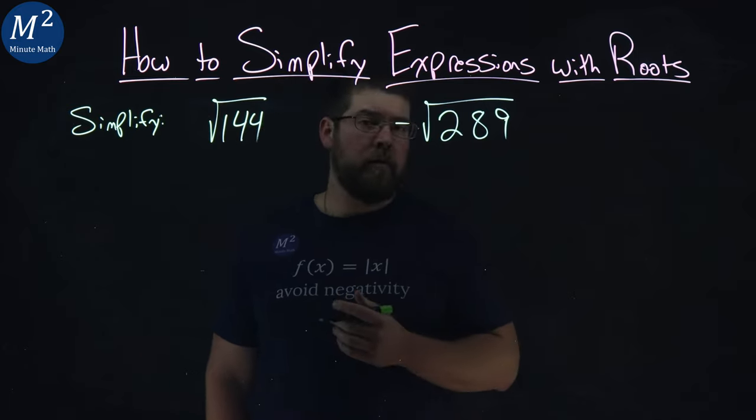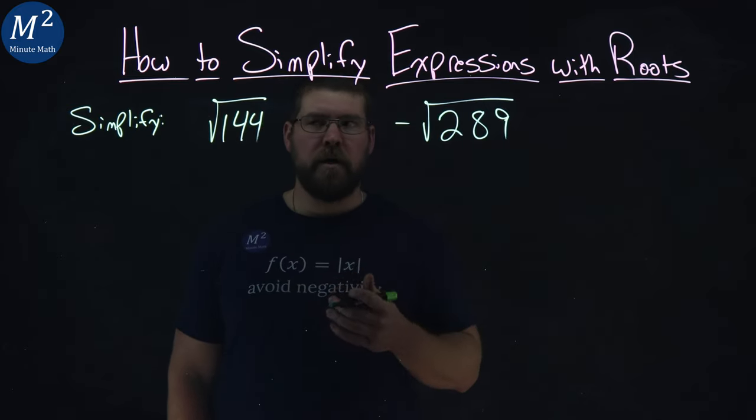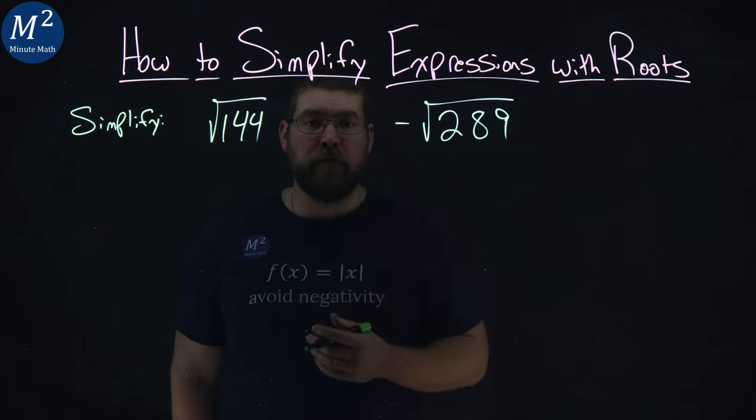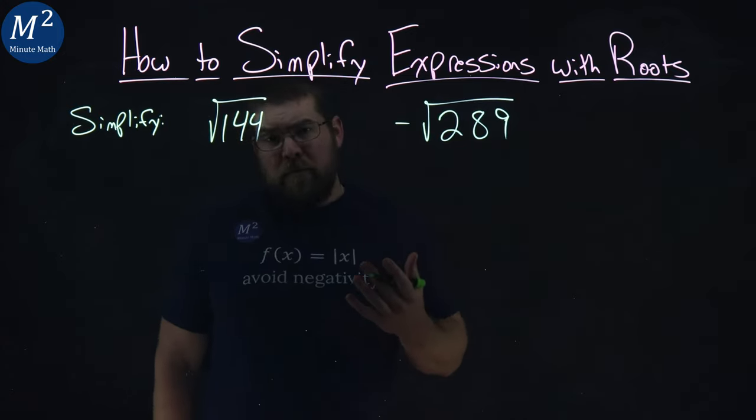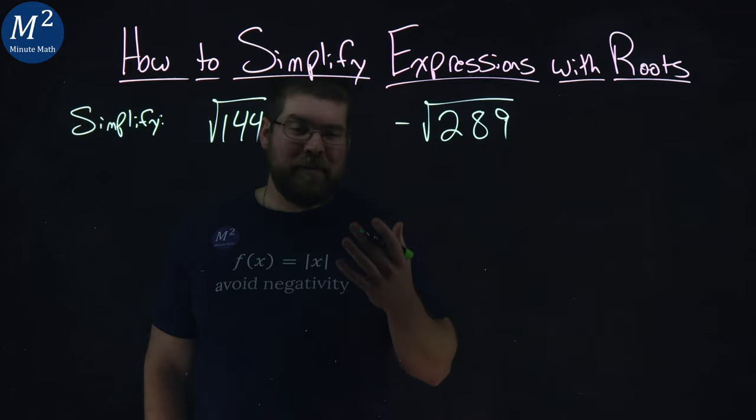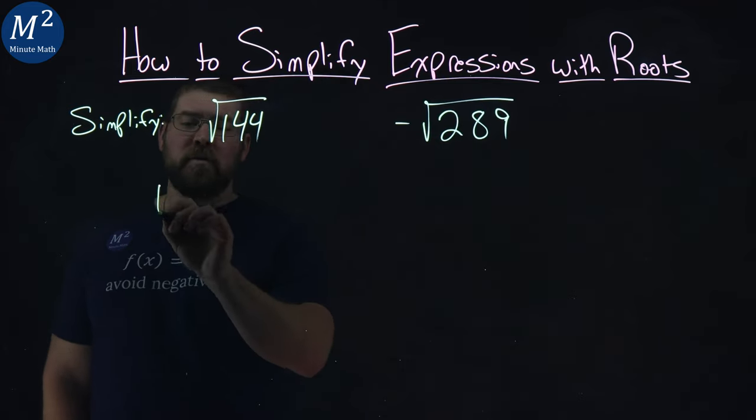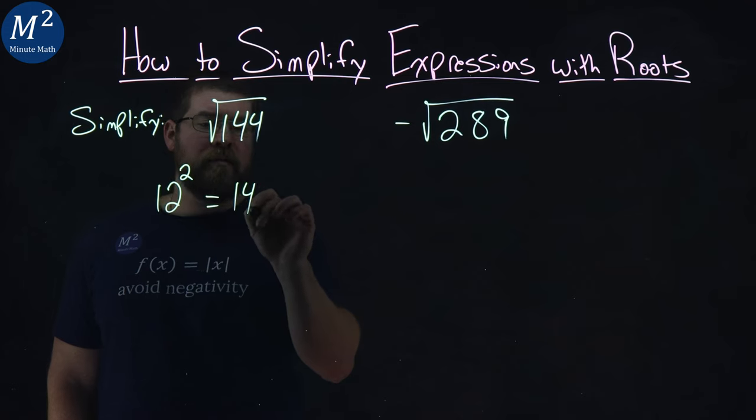So with the square root of 144, I need to ask myself, what number squared gets me 144? Hopefully, some of this stuff you'll have memorized. Maybe not, maybe you do. But 12 squared gives me 144.